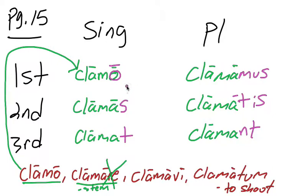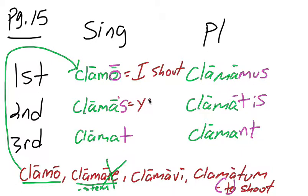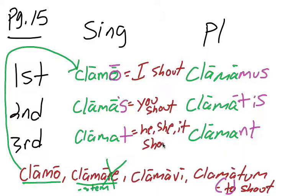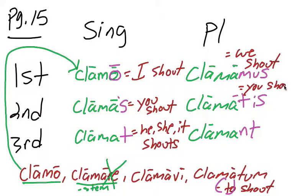Now we translate — think of it as reading the endings backwards. O means I, and clamo means to shout, so we drop the 'to': I shout. Clamas — s means you — you shout. Clamat — t means he, she, or it — he/she/it shouts. Clamamus — we shout. Clamatis — you all shout (the 'all' is understood). And clamant — they shout. We have now conjugated and translated our first Latin verb.